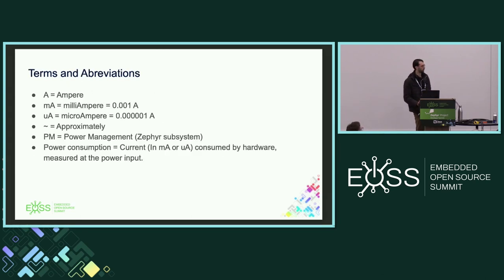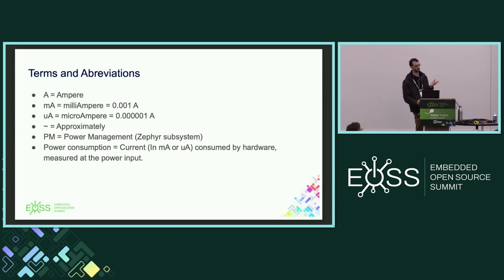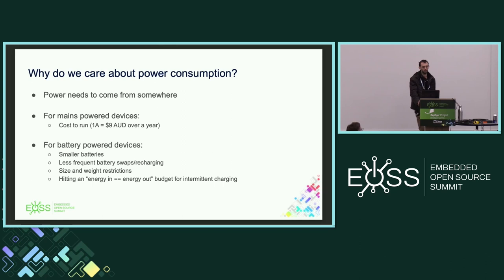Quickly, for those who may not be aware, some abbreviations I'll be using: 'A' is ampere (current), milliamps, microamps, '~' is approximately, 'PM' is power management subsystem. I use power consumption as current — milliamps/microamps — more so than microwatts, because it's easier for me. So, why do we care about power consumption?